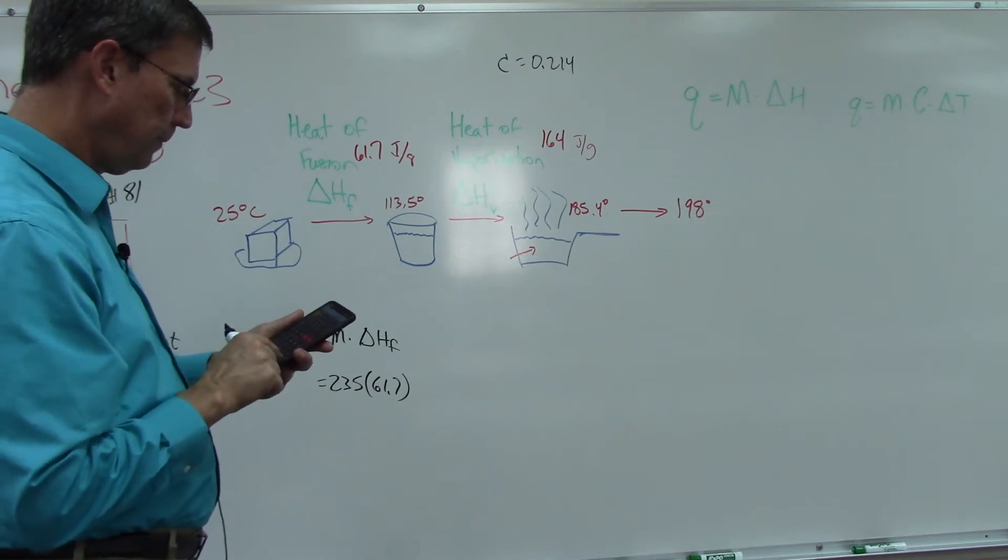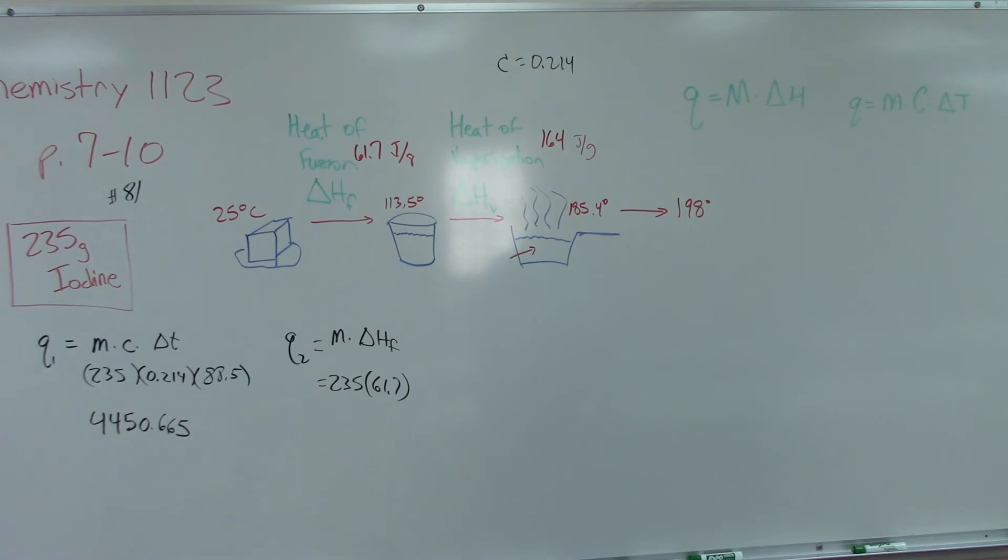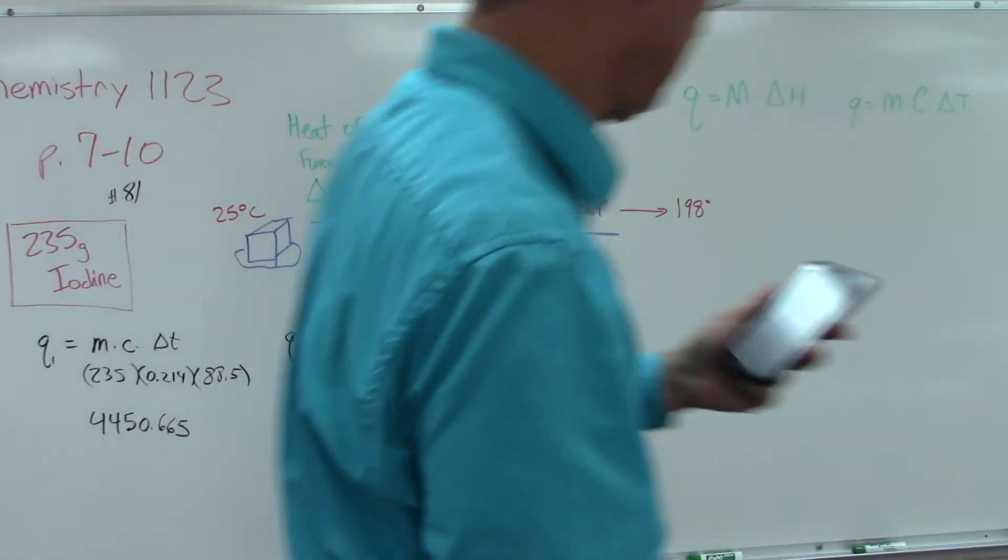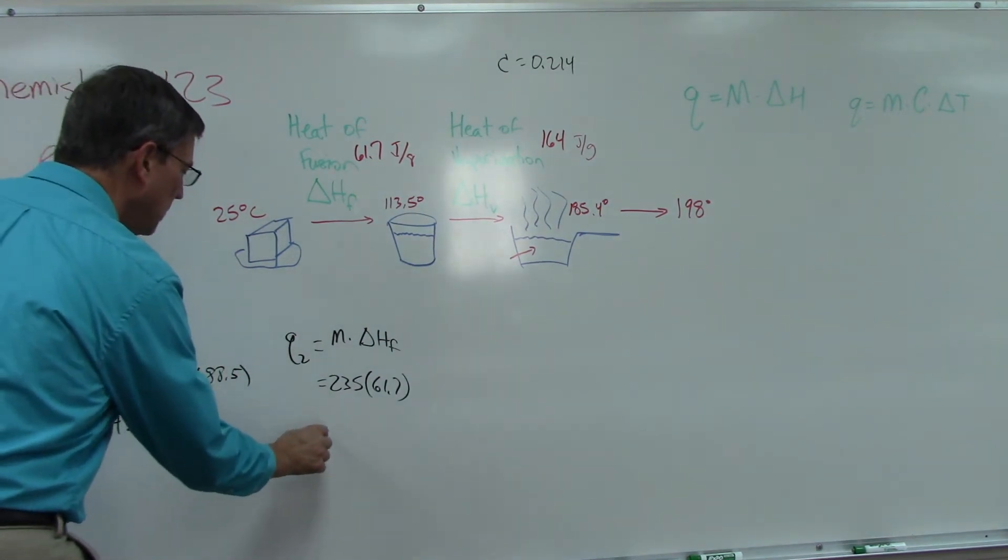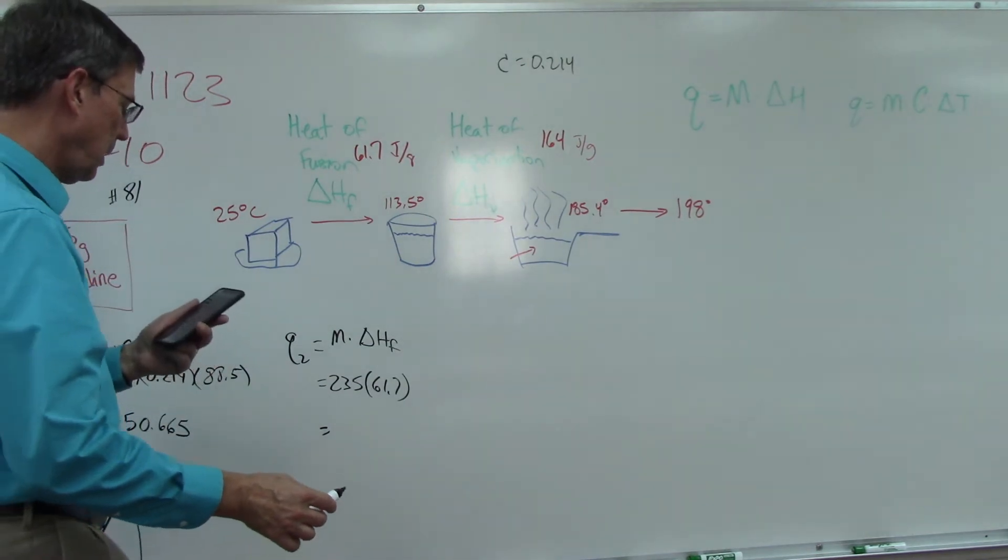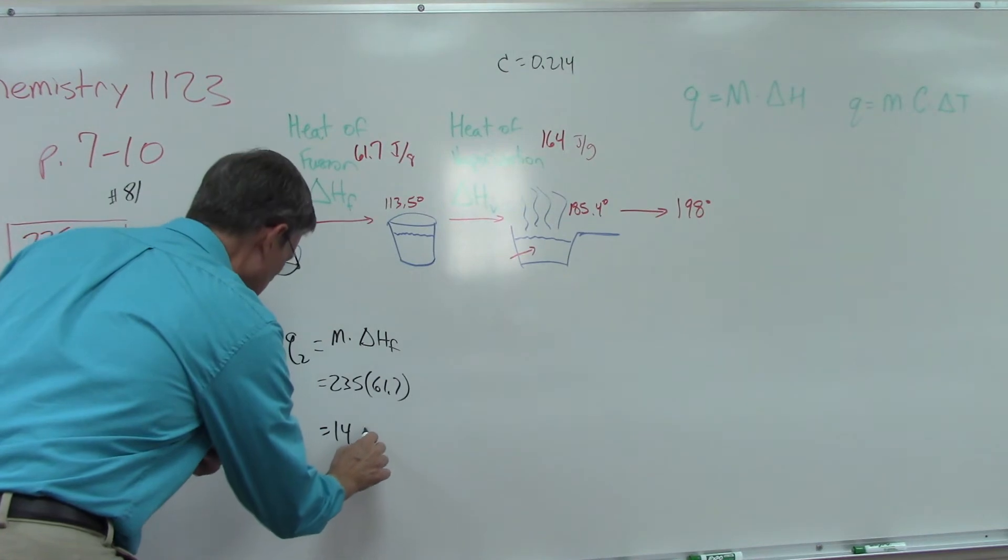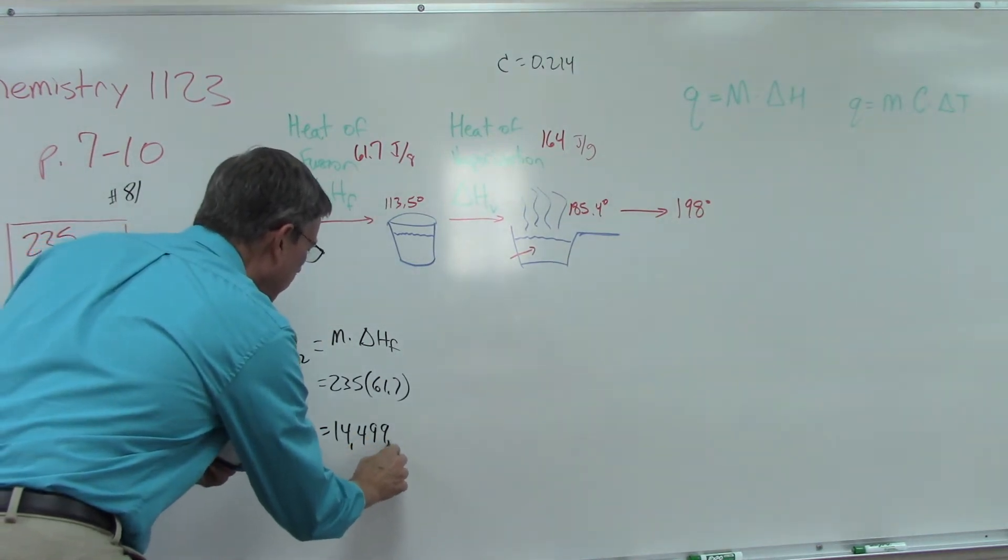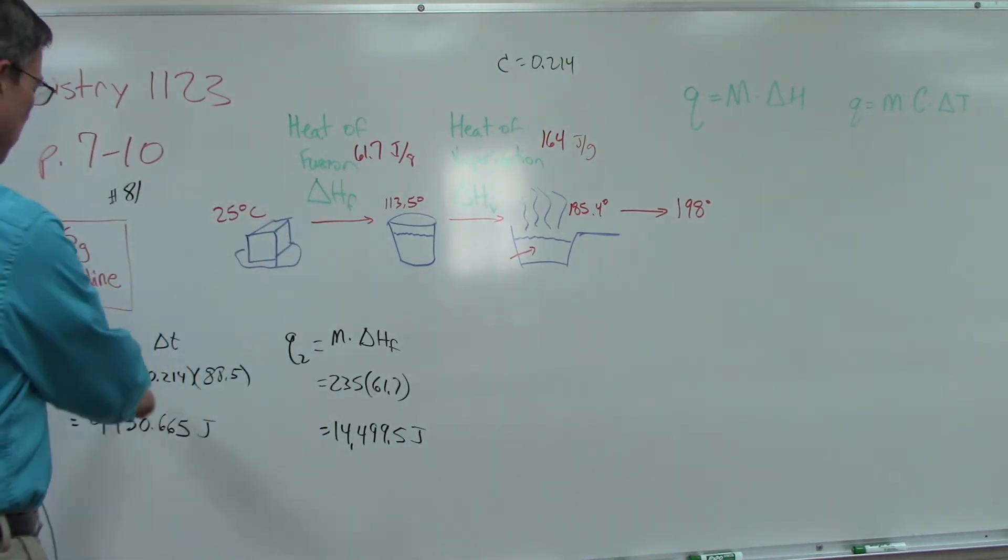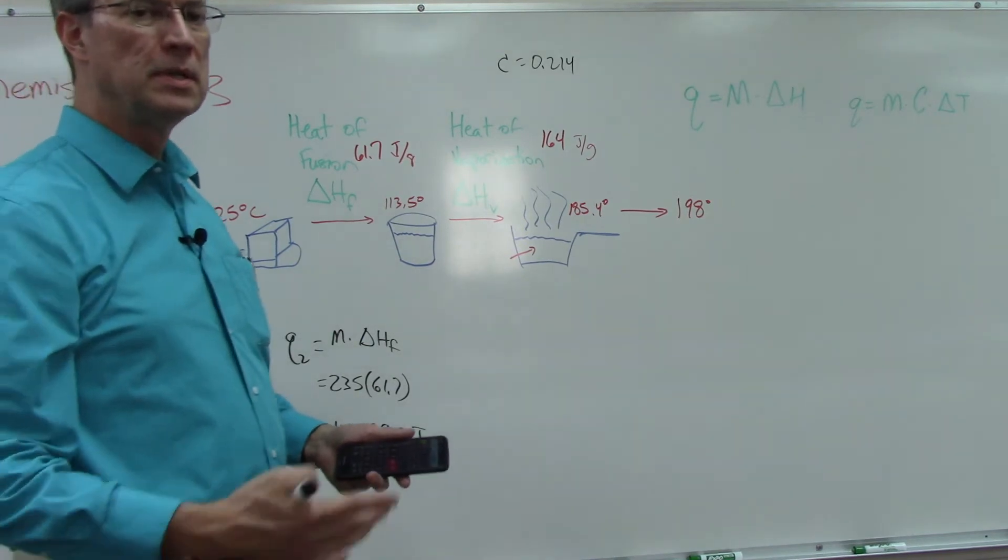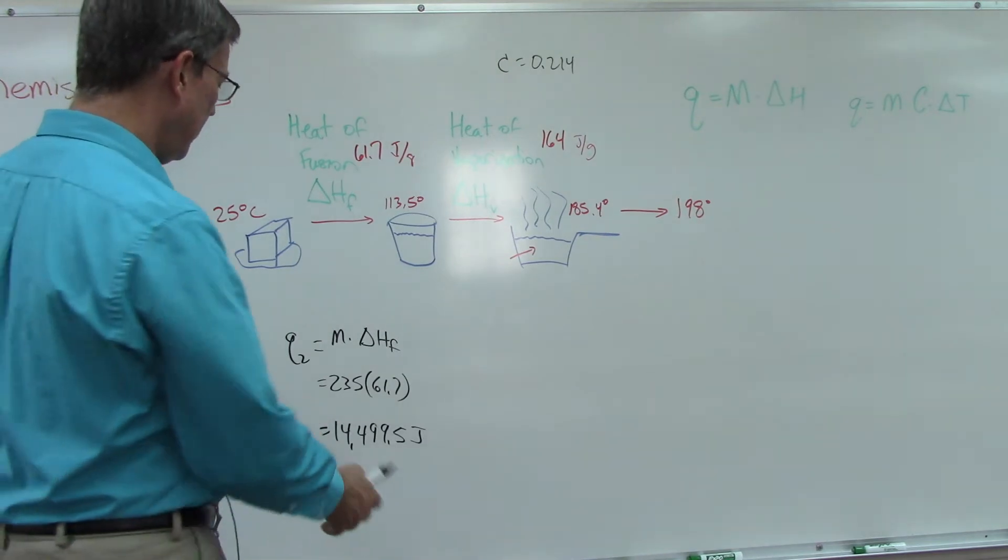So do the math on your calculator. Are you with me? Did you get it? I'm going to write it down, but don't just copy mine. Make sure you do the math because I want you to see how it's working out. 4499.5, of course that's joules, same with this. Notice I didn't put all the units in. As long as we're in the same units it makes it cleaner, and we just know that our final answer is going to be energy heat, so it will be in joules.